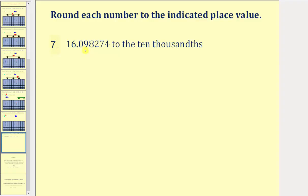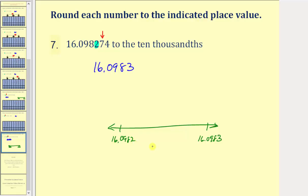Here we're asked to round 16.098274 to the ten-thousandths place value. Let's be careful identifying the correct place value: we have the tenths, hundredths, thousandths — and the ten-thousandths would be this two. The digit to the right is a seven, and because it's five or more we round up, changing the two to a three. So this rounds to 16.0983, which means the given value is closer to 16.0983 than it is to 16.0982 on the number line.